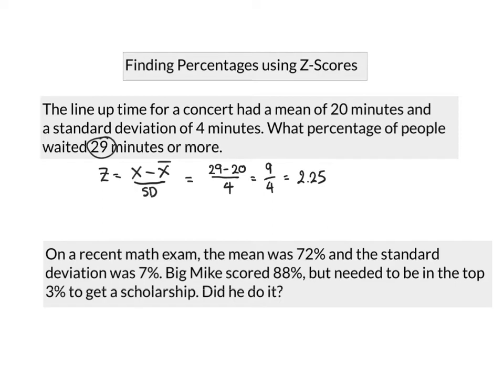Now we know that on a bell curve, on a normal curve, the curve's going to look something like this. We know the mean runs down here, and 2.25 is going to be about here. And we're looking for the percentage of people that waited more than 29 minutes, because we know the average was 20 here, and the data point we got is 29. So we're looking for that area above.